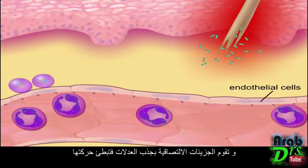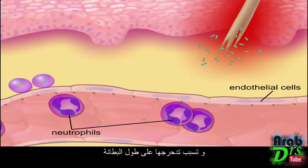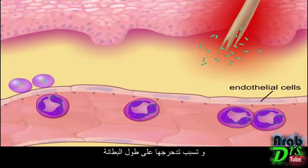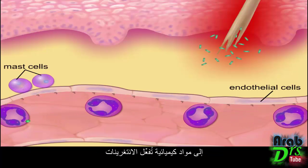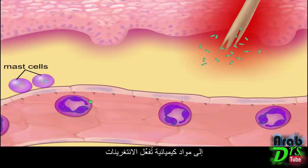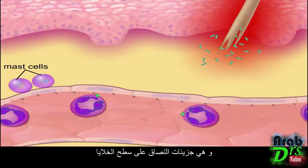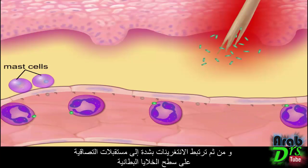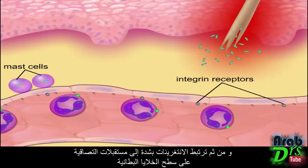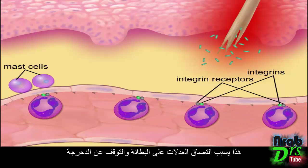These adhesion molecules attract neutrophils, slow them down, and cause the neutrophils to roll along the endothelium. As the neutrophils roll along the endothelium, they encounter chemicals that activate integrins, which are adhesion receptors on their surfaces. These integrins then tightly attach to adhesion receptor molecules on the endothelial cells, causing the neutrophils to stick to the endothelium and stop rolling.